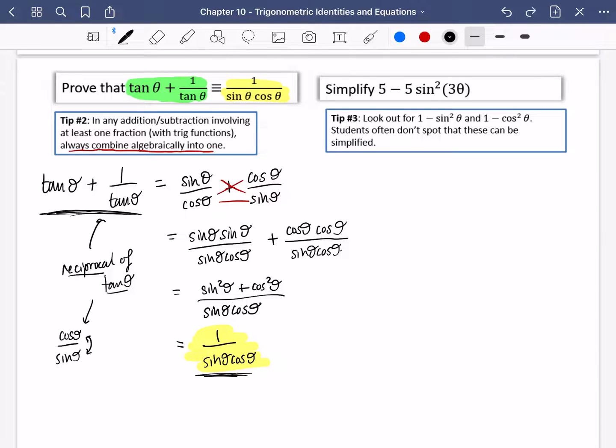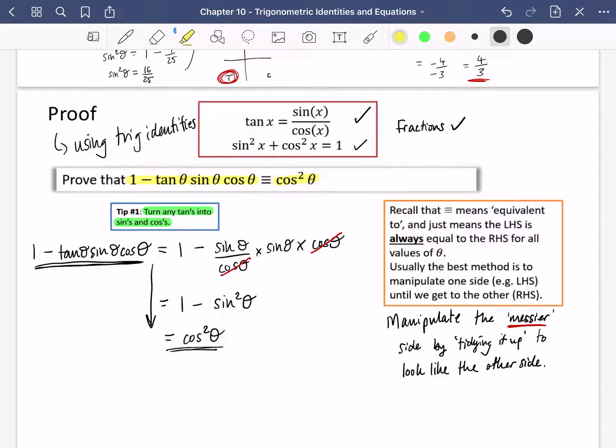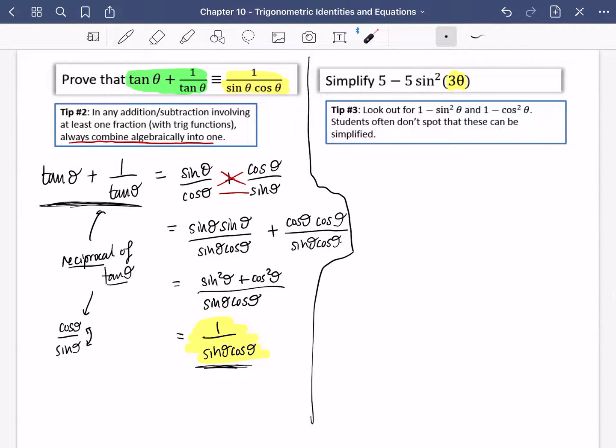Okay, let's have a look at this one. This one says simplify 5 minus 5 sine squared 3θ. Okay, that's interesting. It doesn't say θ anymore, it says 3θ. But these things we've got up here, as long as you change these so that they're all the same, it doesn't matter. I could put 5x inside here, 12x, I could put θ plus 2, whatever you want to put in there. So as long as they're the same, those identities work.